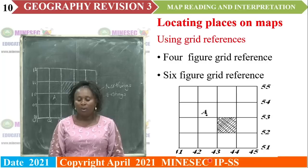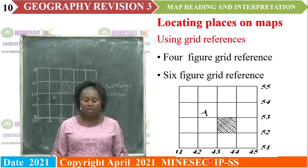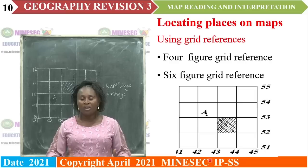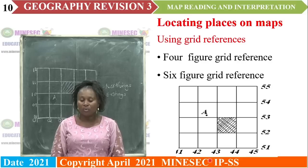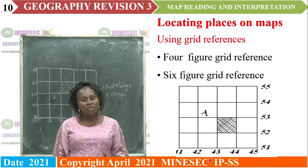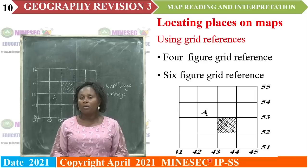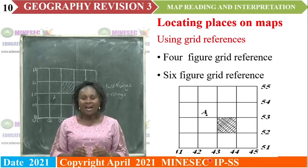Locating places on maps. You may be asked to locate a place — not necessarily on a topographic map, even just around us. Locate your home, locate your school. On a topographic map, we use grid references. Grid references are lines superimposed on a topographic map to show the direction of the east and the direction of the north.